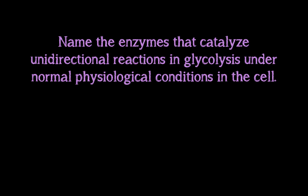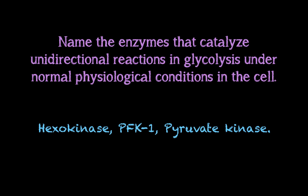Name the enzymes that catalyze unidirectional reactions in glycolysis under normal physiological conditions in the cell. There are ten enzymes in glycolysis — seven catalyze reversible reactions, meaning they go in both directions under normal physiological conditions, but three catalyze unidirectional reactions, meaning they go in one direction only. You should have three enzymes on your paper: hexokinase, PFK1, and pyruvate kinase.